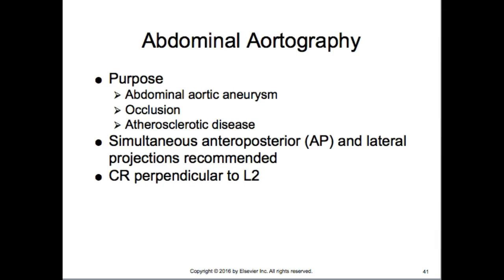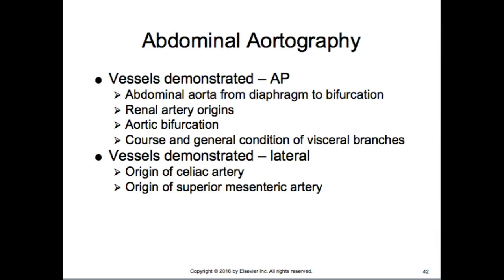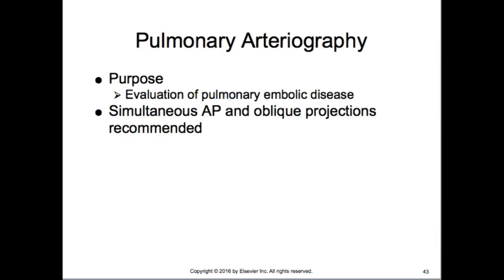Abdominal aortography looks for aneurysm, occlusion, and atherosclerotic disease. AP and lateral projections are done simultaneously using biplane, which is very efficient. Centering is around L2. In the AP we look at the aorta from diaphragm to bifurcation, the renals, and the general condition of branches. In the lateral we look at the celiac and superior mesenteric arteries and ensure the inferior mesenteric is intact. Pulmonary arteriography evaluates pulmonary embolic disease using AP and oblique projections with biplane.